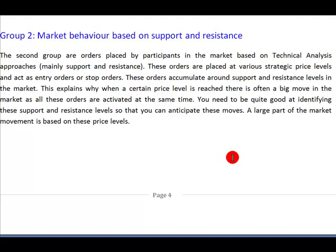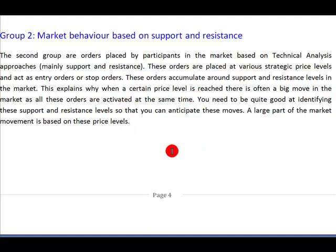The second group of orders are based on market behavior, which is essentially based on support and resistance. These are orders placed by participants in the market based on technical analysis methodologies — mainly on support and resistance price levels. These orders are placed at strategic price levels and act as entry orders or stop orders, accumulating around those levels. This explains why when certain price levels are reached there is a big move, as all these orders are activated at the same time — which is why being competent at identifying key support and resistance levels is so important.